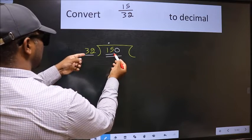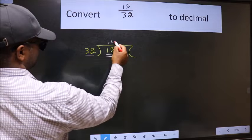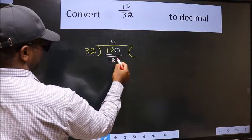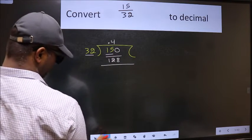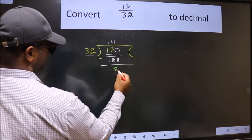A number close to 150 in 32 table is 32 fourths. 128. Now we should subtract. We get 22.